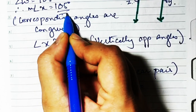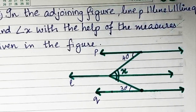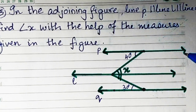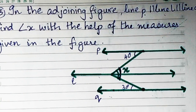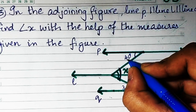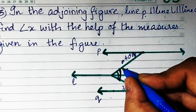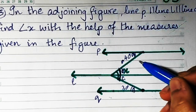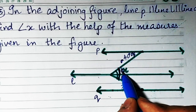So x is 105° and z is 75°. Now let's do sum number 5. In the adjoining figure, p is parallel to q. We need to find angle x using the given measures. Let's name each angle: this one as a, and x has two parts — we'll call them b, c, and d. Angle a is 40°, so angle b will be 40° because they are alternate angles.